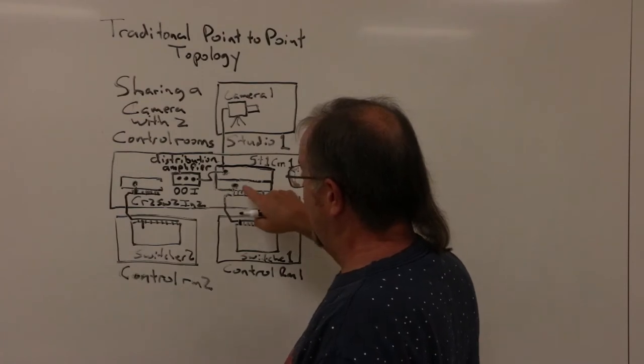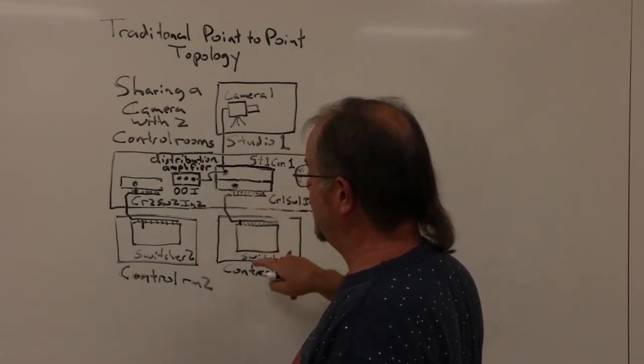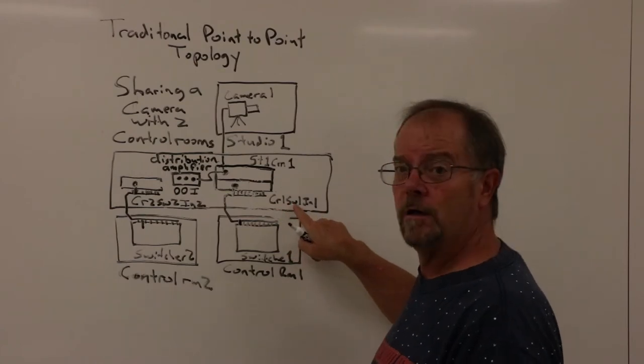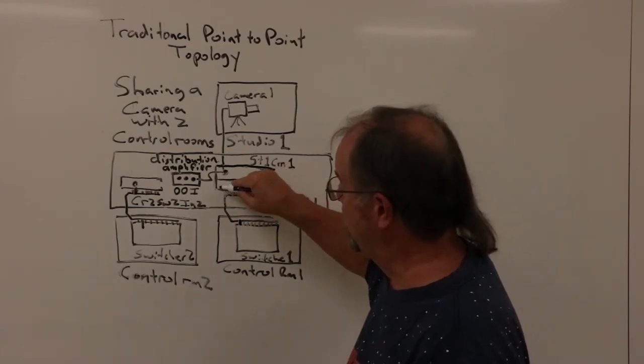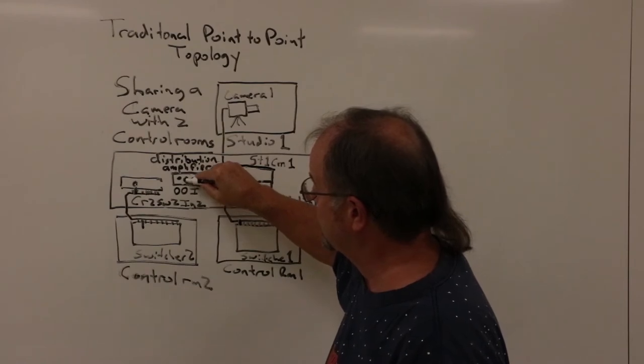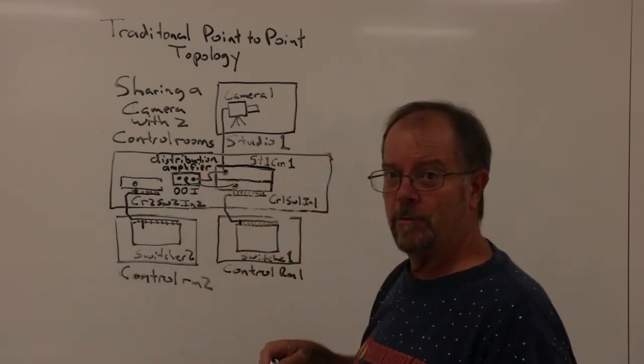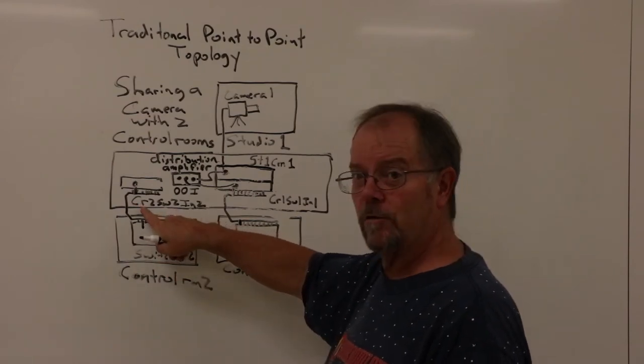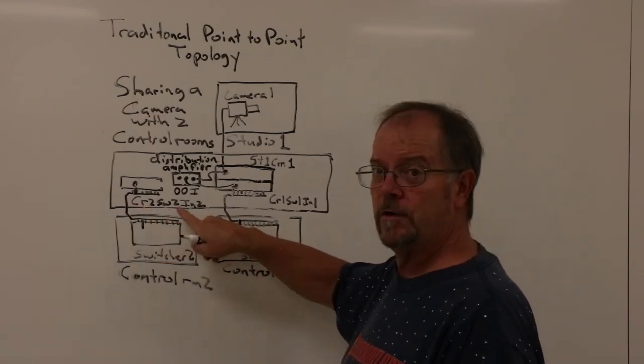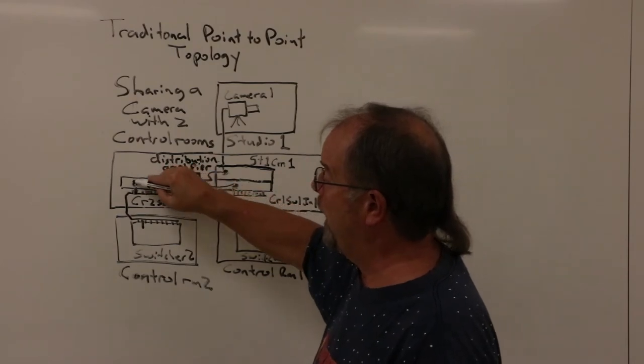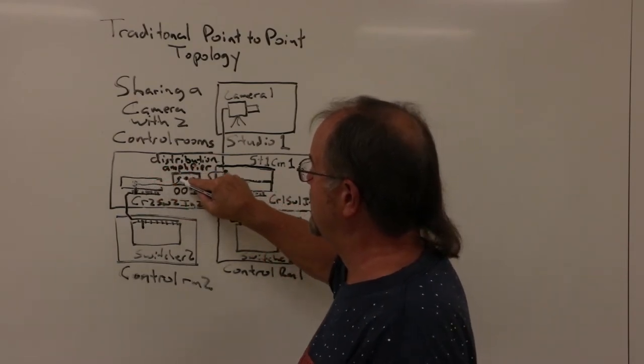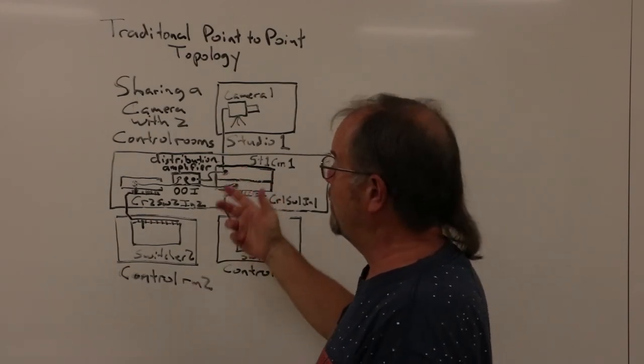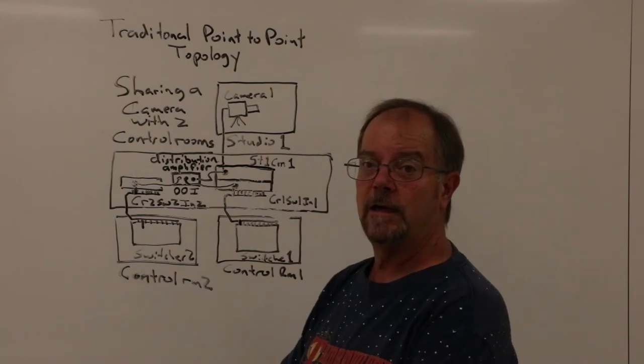Then we would take the input to switcher 1, Control Room 1 switcher 1 input 1, and patch that into the first output. Then we would take the input from switcher 2, Control Room 2 switcher 2 input 2, find that on the patch panel and patch that into the second output of the distribution amp. So now, both studios can use the same camera simultaneously.